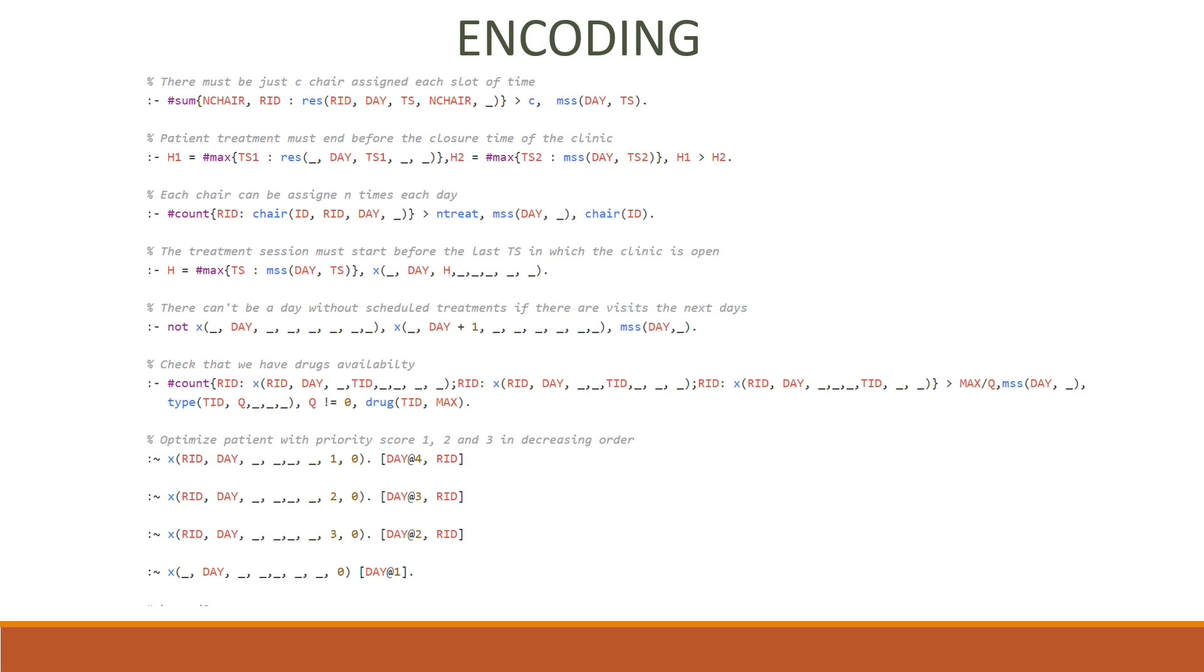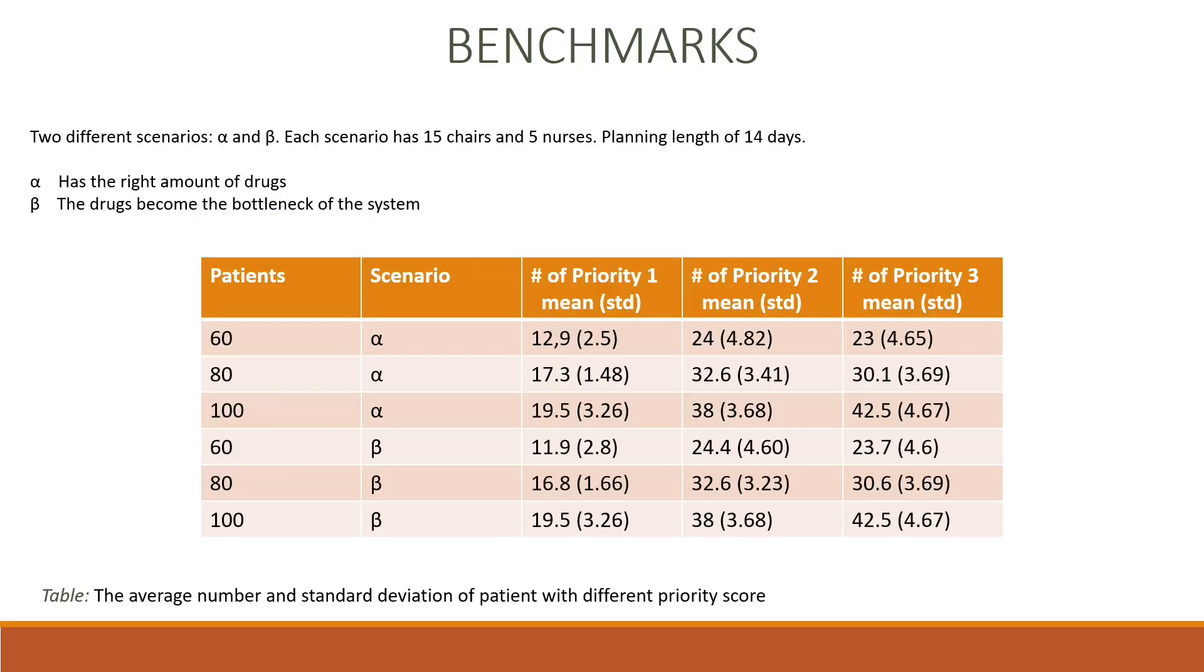Then we have the weak constraints, and the first three weak constraints minimize the sum of the day assigned to every patient with priority 1, 2, and 3, in decreasing order. So this is used to assign the patients as soon as possible, and in particular it assigns before the patients with priority 1, and then the others. The last row isn't really necessary, but we have found that it helps to reach a better solution, and what it says is to assign every patient as soon as possible without taking into consideration the priority.